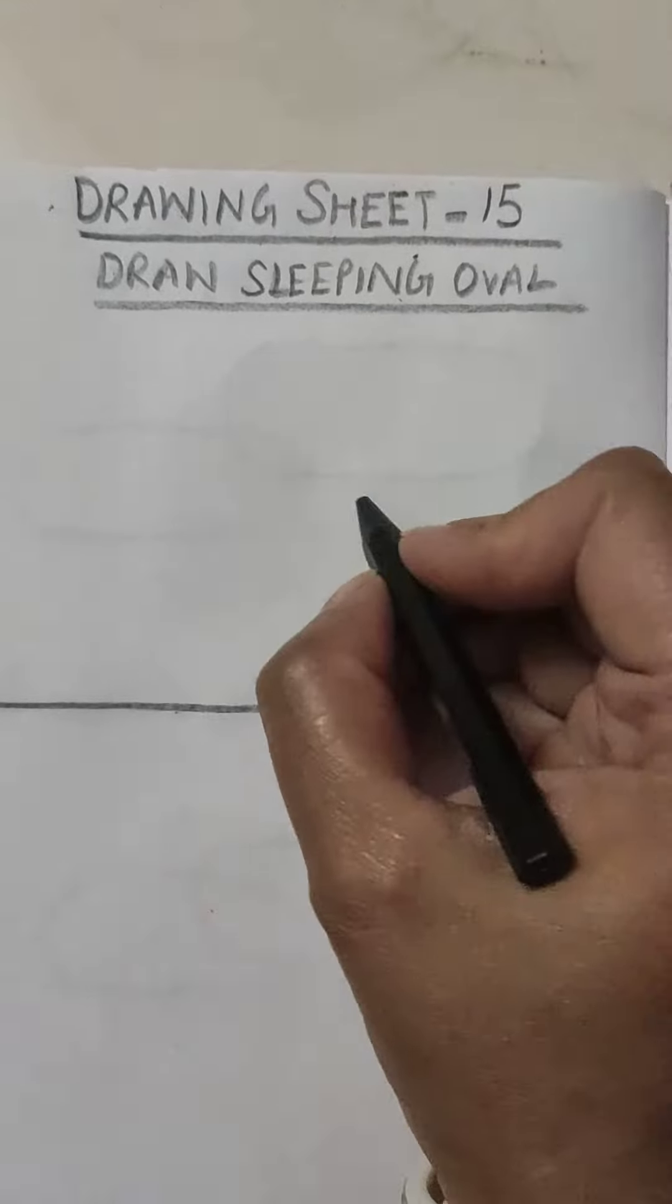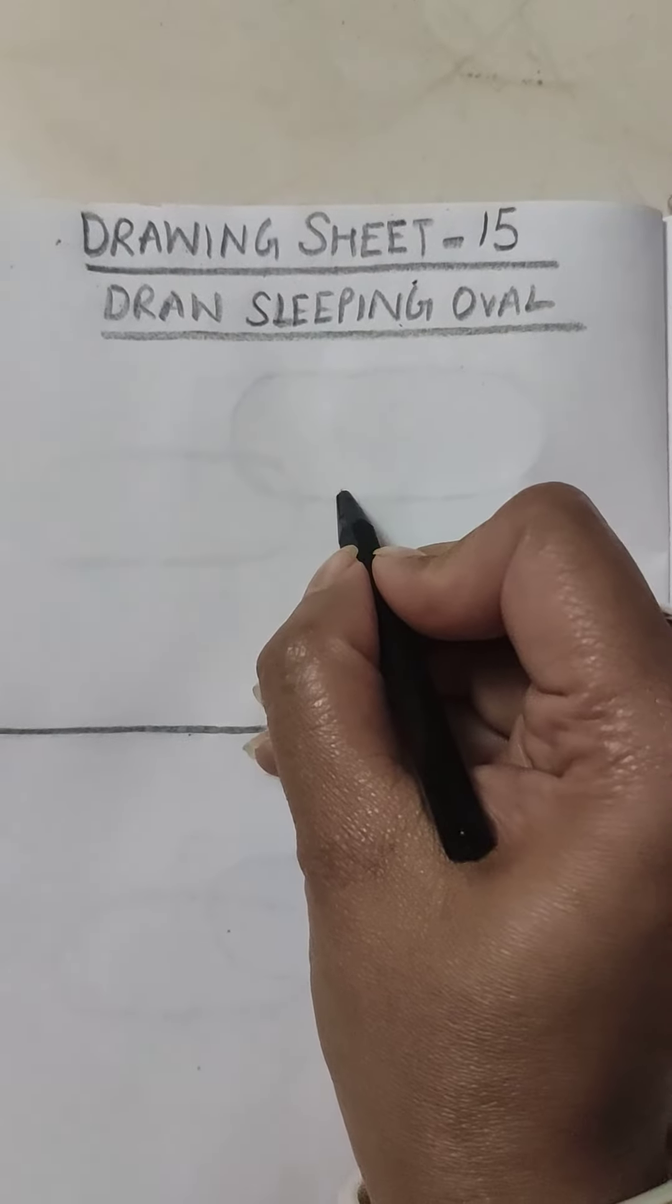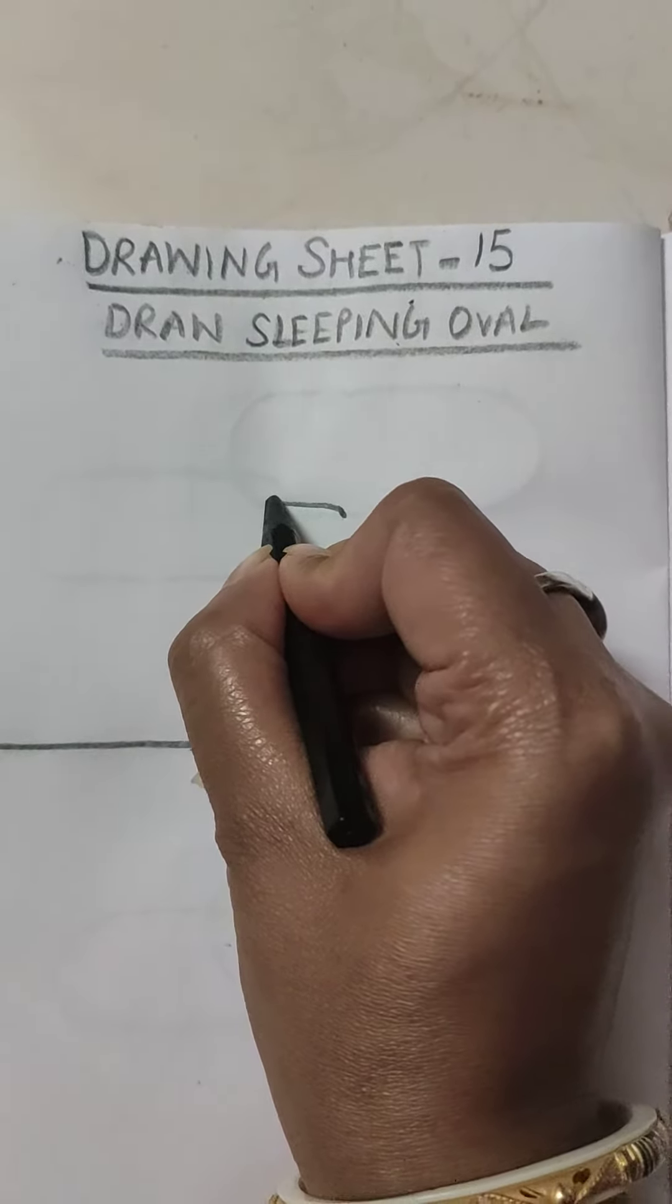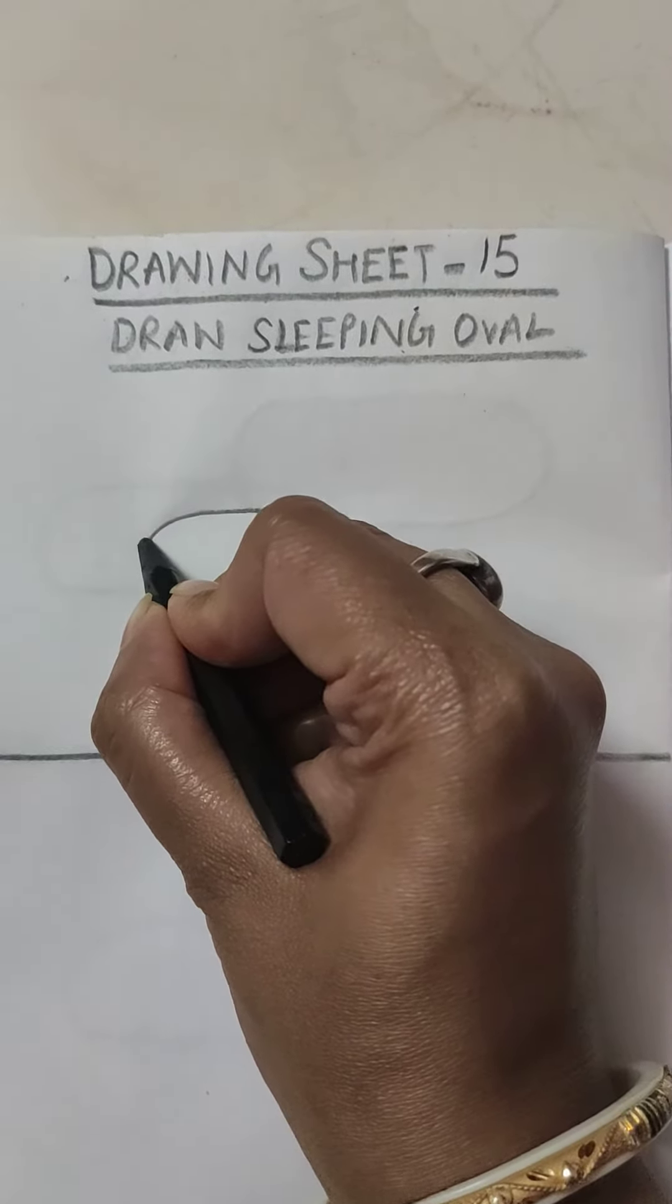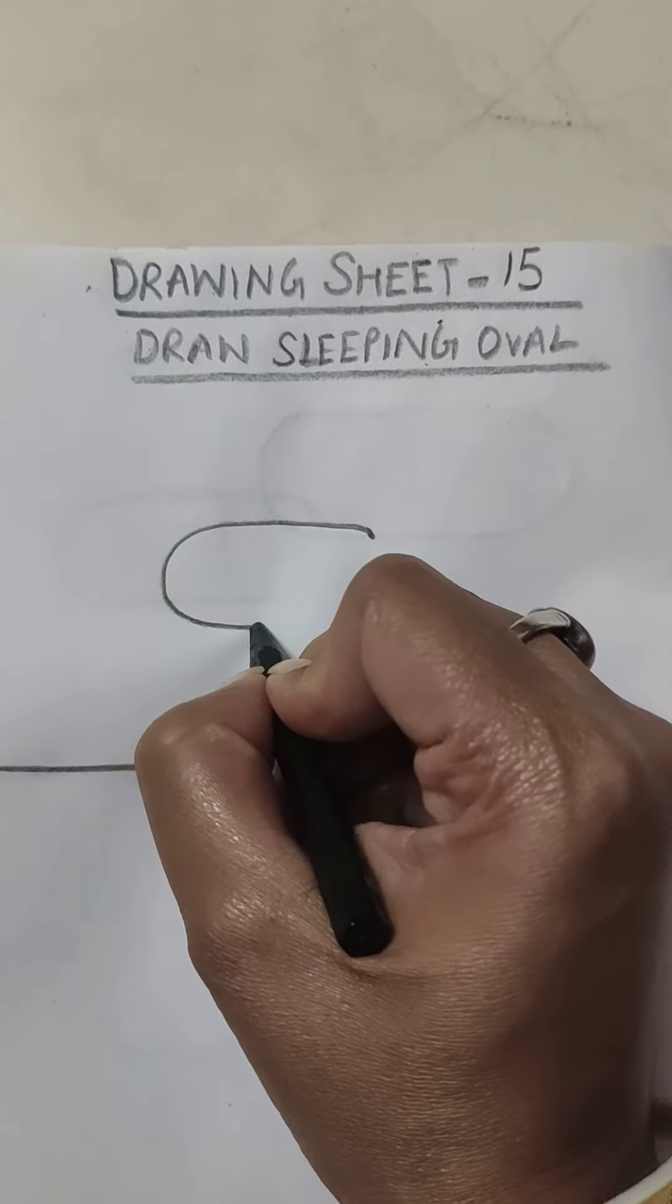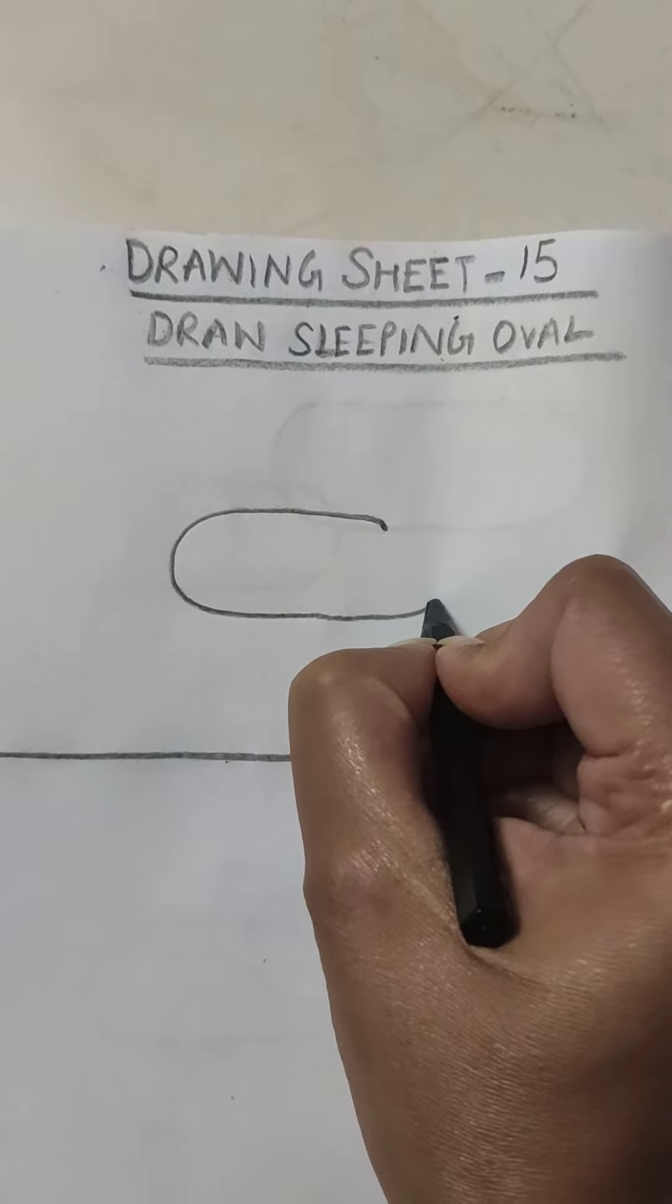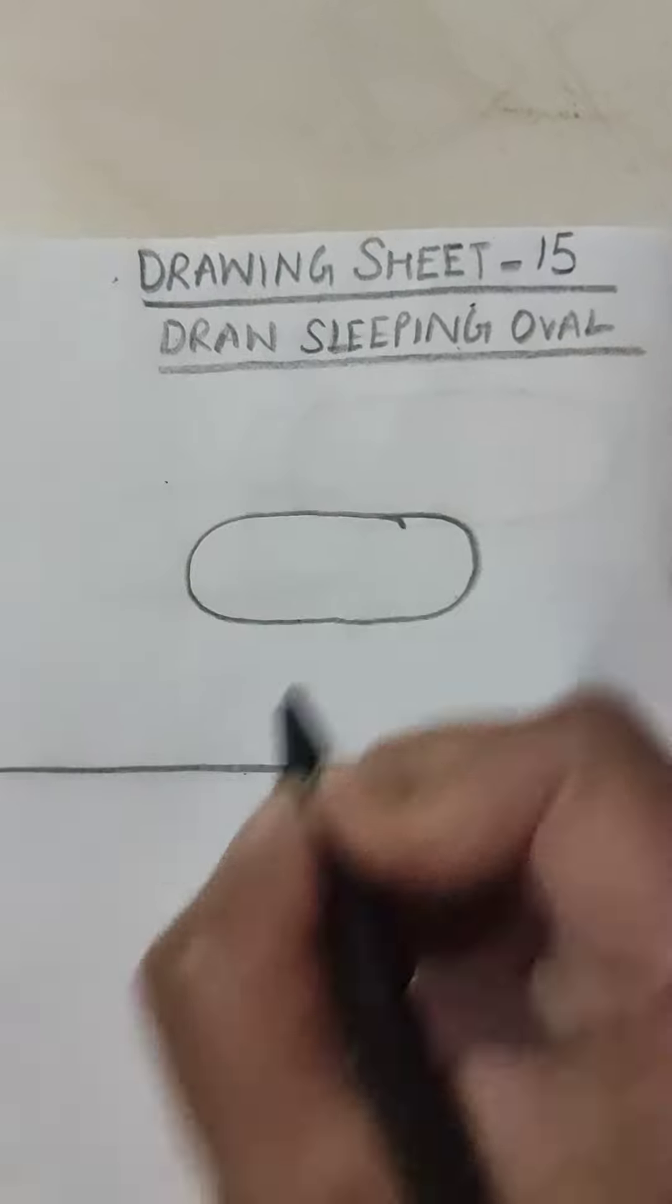To draw a sleeping oval, first you are going to make a small dot. Then keep your crayon on the dot and you will move your hand towards your left hand side. Then you will turn, make a curve, turn, come down like this, go, keep on moving your hand, go up and touch the dot and stop.